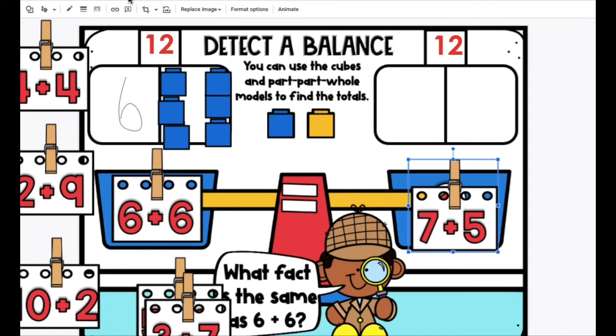Let's try it. I'm going to use the scribble tool again to write in the biggest number, and then count up on the blocks. So 7 plus 5. 7, 8, 9, 10, 11. You said it. 12. It's a balance. Yay!